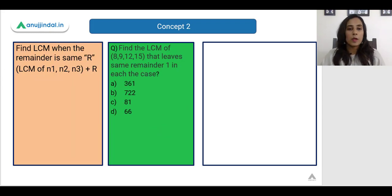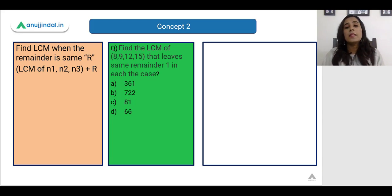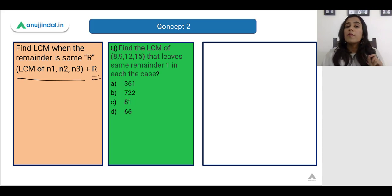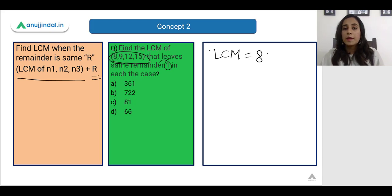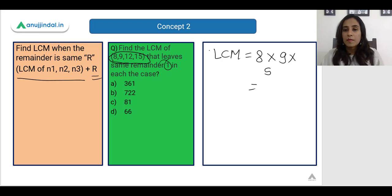Now let us see another concept: finding the LCM when the remainder is r. When you are given numbers that leave the same remainder r, you take the LCM of those numbers and add the remainder. For example: find the LCM of 8, 9, 12, and 15 that leaves the same remainder 1 in each case. The LCM of 8, 9, 12, and 15 is 8 × 9 × 5 = 360.